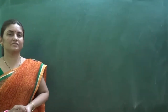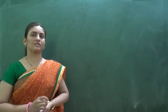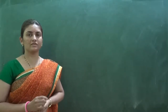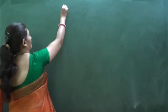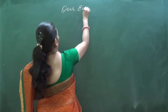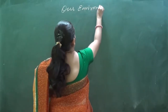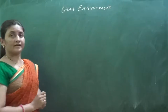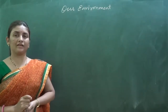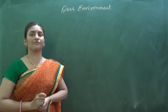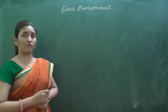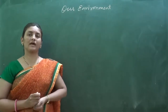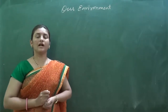Good morning students. Today we are starting off with the remaining topics in the chapter, 'Our Environment.' Yesterday we discussed what is meant by environment — the surroundings of us is the environment. We come across two types of environment: the natural environment and the artificial environment.